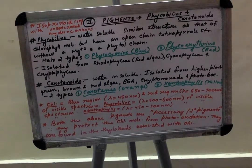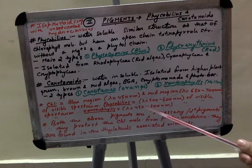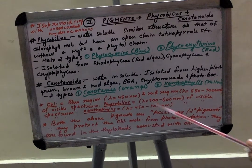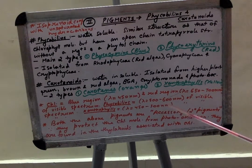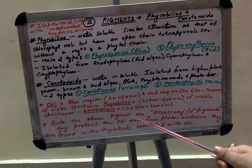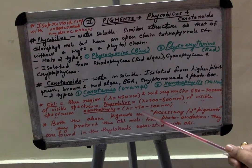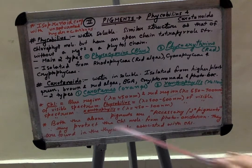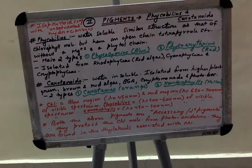In case of phycobilins, the absorption range is between 500 to 600 nanometers of the visible spectrum. And in case of xanthophyll, the absorption range is between 550 and 500 nanometers of the visible spectrum. These few values are very important and often asked.